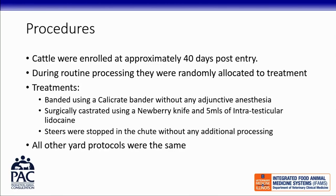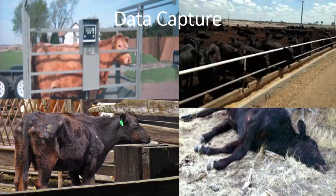At enrollment we tagged the cattle. We used a calicrate bander without any adjunctive anesthesia — normal procedure — or surgically used a Newberry knife to incise the bottom of the scrotum, with five cc's of intertesticular lidocaine in each testicle. Steers were run through the chute the same way as bulls — held, squeezed, tail raised — but were not castrated since they had no testicles. All cattle were re-vaccinated at that time with the same vaccination.